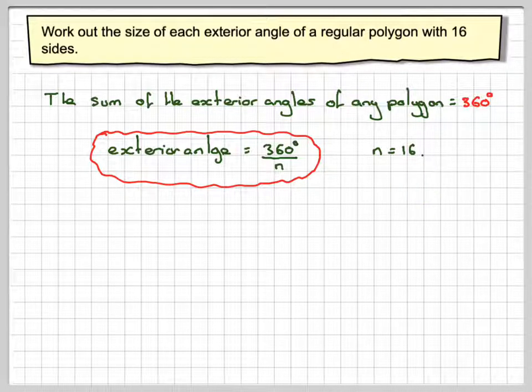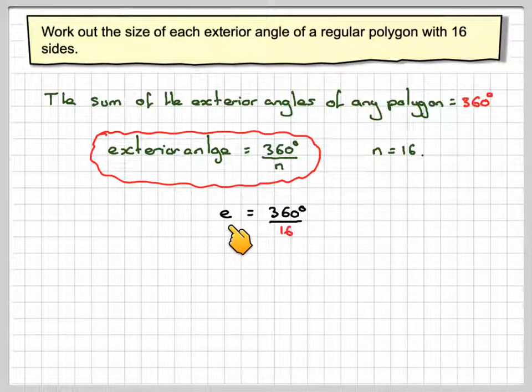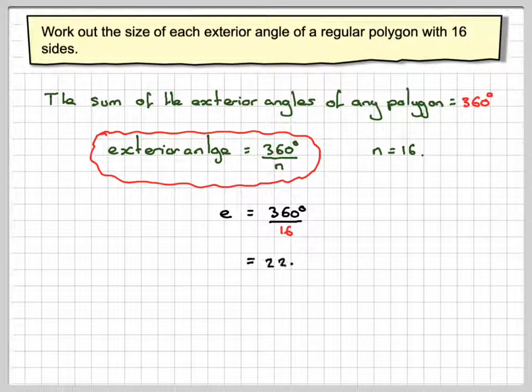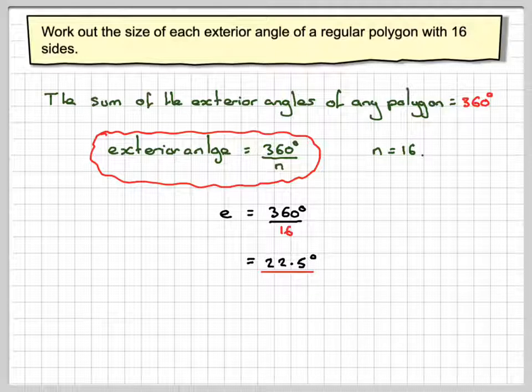And therefore n is 16 in this case. Therefore the size of an exterior angle, e, will be 360 divided by 16, which is equal to 22.5 degrees.